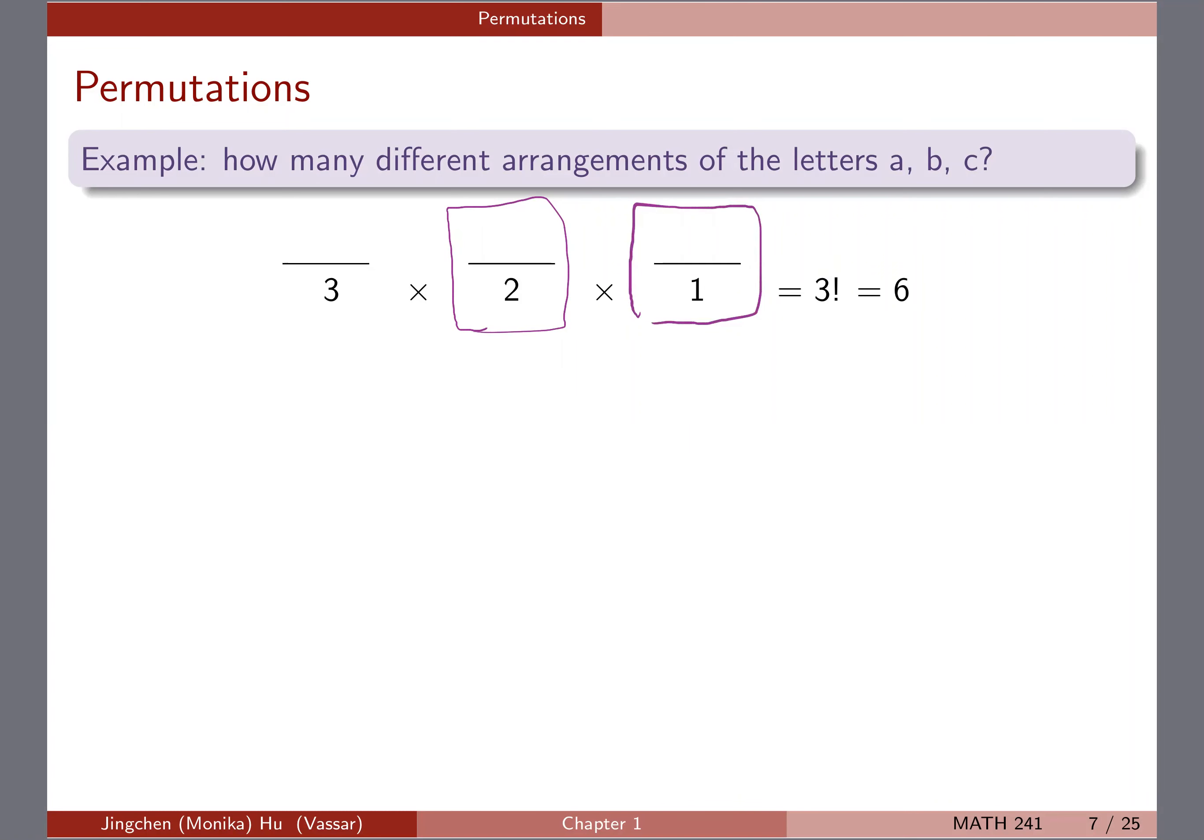In short, if we're going to use what we covered earlier about the generalized rule of counting, you will have three times two times one number of arrangements. And if you do the math, it's going to be six. And notice that we're using a particular notation here. So this three exclamation mark, we read it as three factorial.